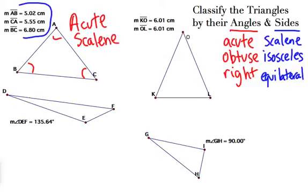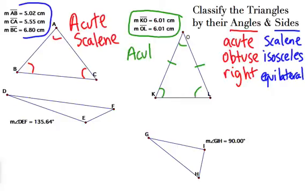Our next one, these two sides are the same — I measured them, they're the same. So that makes it isosceles. The bottom is clearly a lot less, and again all our angles are acute. So this is acute isosceles. Those little tick marks are used to show that those two sides are equal to each other.